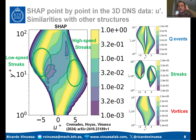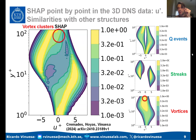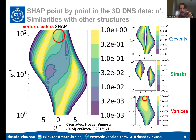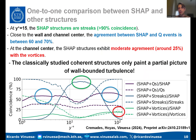Notably, Q events and streaks by definition exclude regions of zero streamwise velocity fluctuation, yet the SHAP structures include some contribution from structures with near-zero streamwise velocity fluctuation. The region close to the channel center in the SHAP distribution resembles vortical motions. So the SHAP structures — the most important ones objectively identified with explainable deep learning — contain a mix of classical structure types. We now examine the point-by-point coincidence between the different types of structures.